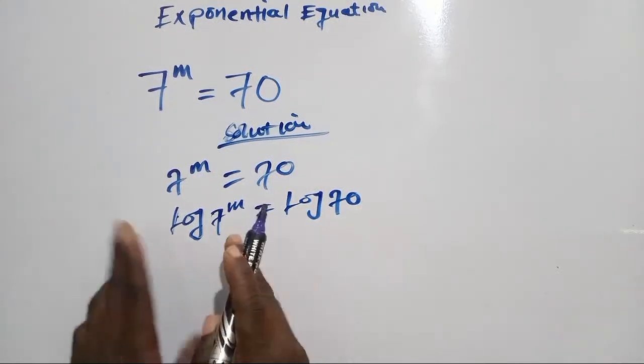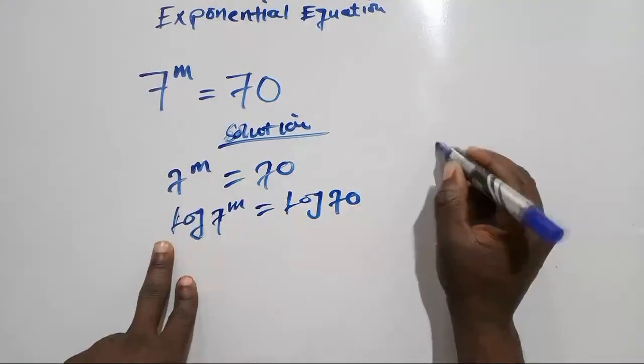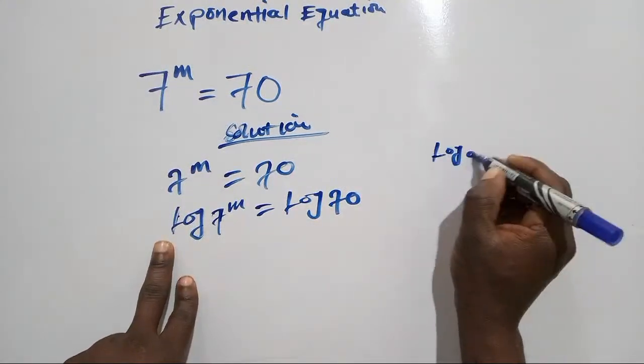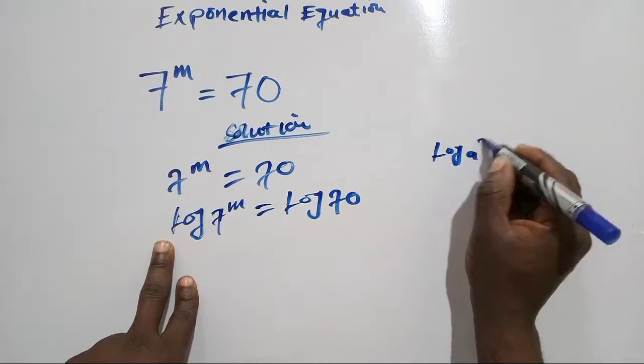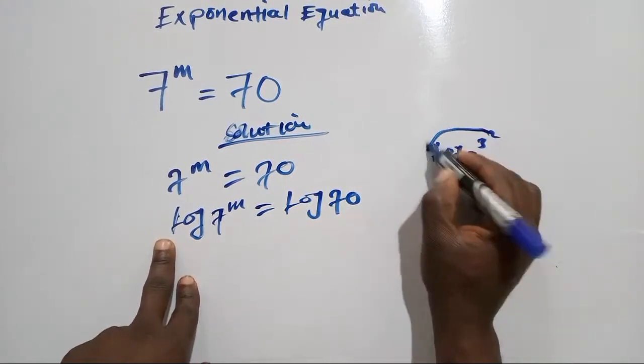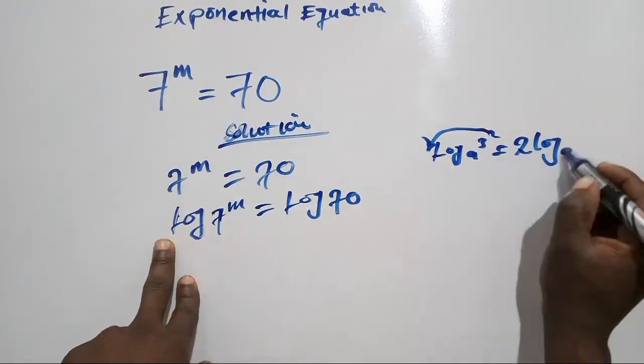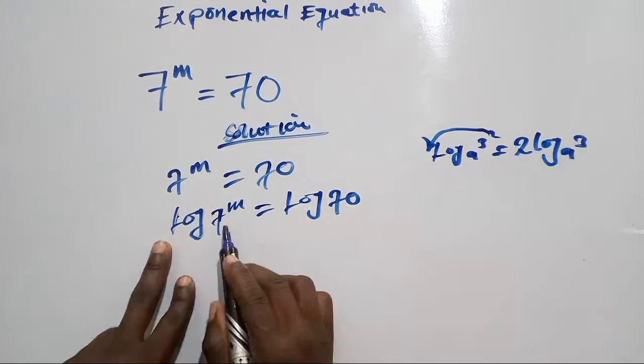Then we have to follow a rule of logarithm, which is: whenever you're having log a to the power b, you can drop this power down in which it will be b log a. So we are going to do the same thing here because we are looking for a value of m.